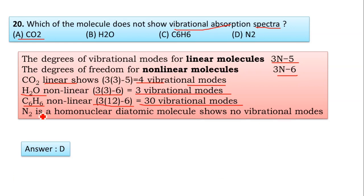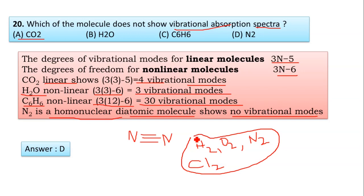You take N₂—N₂ is a homonuclear diatomic molecule, N≡N. It is a homonuclear diatomic molecule that shows no vibration. Homonuclear diatomic molecules like H₂, O₂, N₂, and Cl₂ do not show any vibrational modes in IR spectra, in vibrational spectra. Hence, option D is correct.